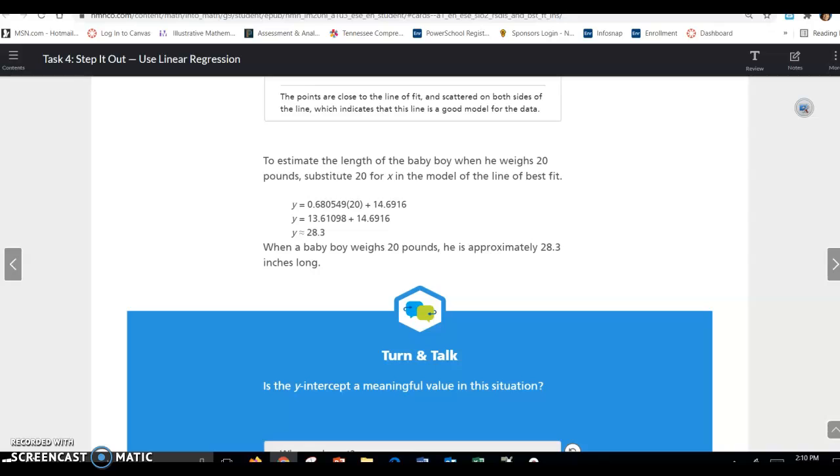To estimate the length of the baby who weighs 20 pounds, substitute 20 in for the equation. So this is the equation given. X, remember, is our weight in pounds. So if you substitute 20 in, this is going to give you an estimate of how long or how many inches long the baby is. So when a baby boy weighs 20 pounds, he is approximately 28.3 inches long.